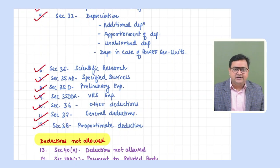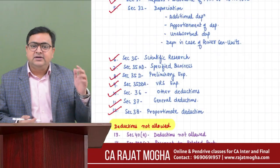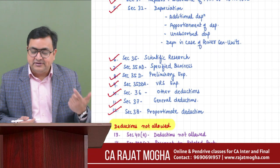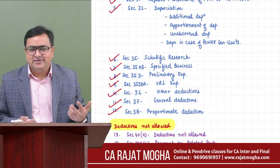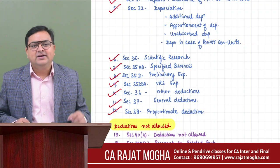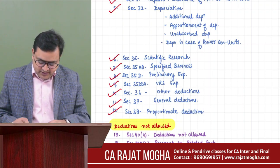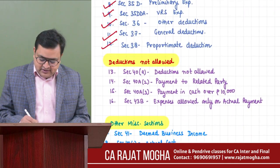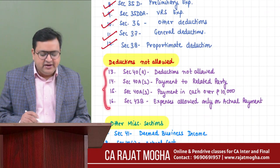Section 37 is the general deduction — if any expense is not covered under Sections 30 to 36, and it is a business expense, not personal, not capital expenditure but revenue expenditure, and not prohibited by law, then you can allow that expense under Section 37. Now we come to an important portion: deductions not allowed. These four sections are very important from the examination point of view.